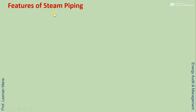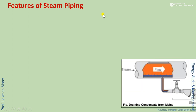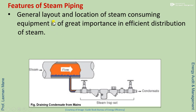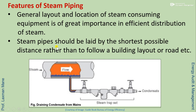Features of steam piping: here is a diagram of the steam piping general layout. The location of steam consuming equipment is of great importance in efficient distribution of steam. Steam pipes should be laid by the shortest possible distance to avoid frictional losses, rather than following a building layout or road.